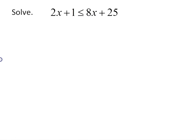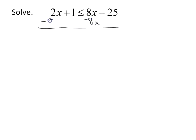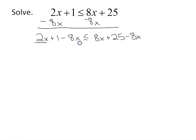Here I have 2x plus 1 is less than 8x plus 25, so I'll use the same process. I want to get my x terms on the same side. Typically with inequality symbols it's better to put the variable on the left side and the constant terms on the right. So I subtract 8x from both sides, giving me 2x minus 8x, which is negative 6x, plus 1 on the left.